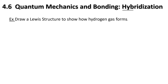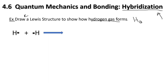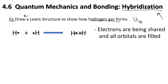In our lesson today we're going to be looking at a term called hybridization - this is the word of the lesson. Let's start by drawing a Lewis structure to show how hydrogen gas (H₂) forms. In grades 9-11, we take one hydrogen with its one valence electron and put it with the other hydrogen, also with one valence electron. We circle the orbit, and those electrons are now shared by both atoms, filling all the orbitals.